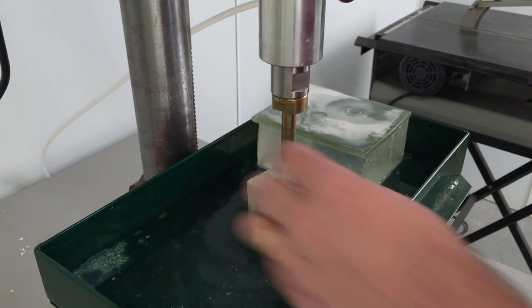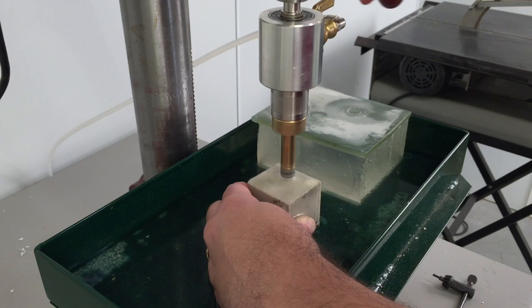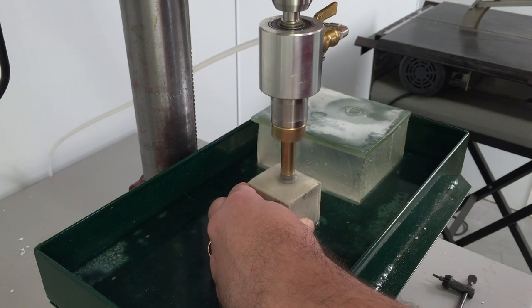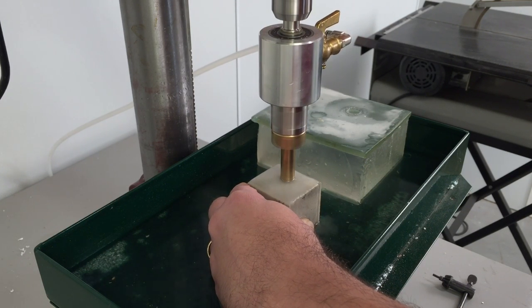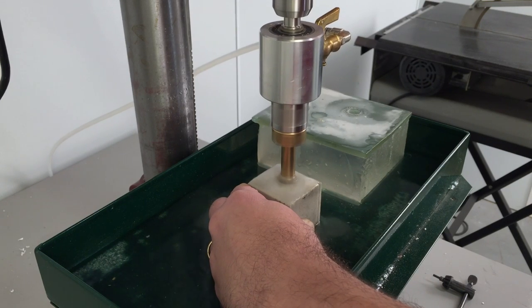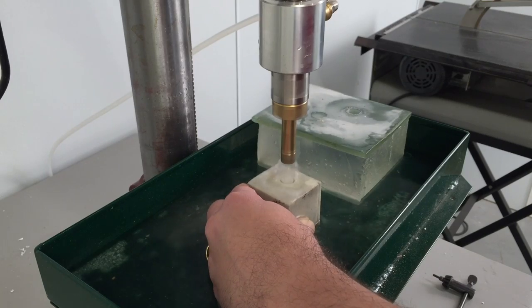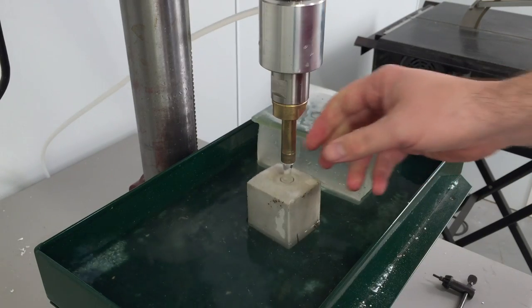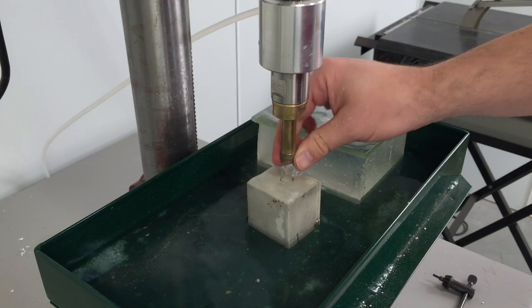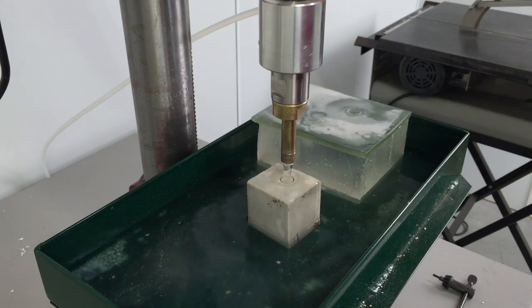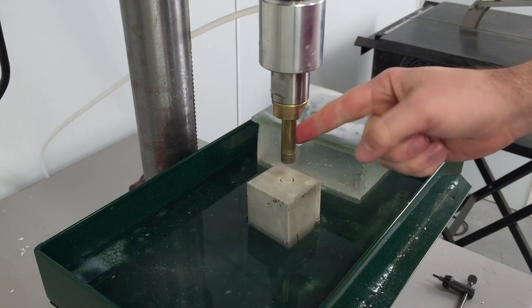When your core drill starts to wear out or you've done something like I've done where I've glazed some glass on the tip of this, you'll want to dress the core drill. I'm going to turn on my water flow again. Turn on my drill press. I'm just going to make a drill into the dressing stick. Now you'll see with one quick drill into the dressing stick, I have nice diamond coverage on my core drill again.